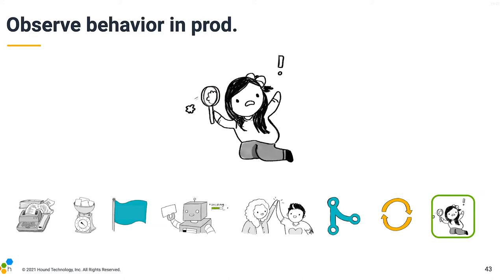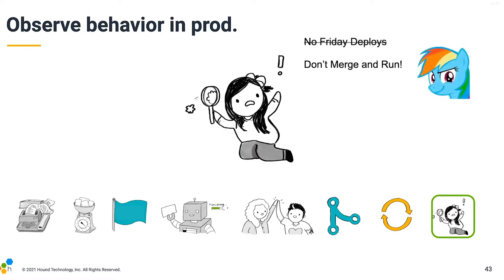And finally, we bring it full circle — we observe the behavior of our changes in production using the instrumentation that we added at the beginning. Your job is not done until you close the loop and observe it in production. You check it right away, and then a little bit later to see how it's doing with real traffic and real users. It's not 'no Friday deploys' — it's 'don't merge and run.'